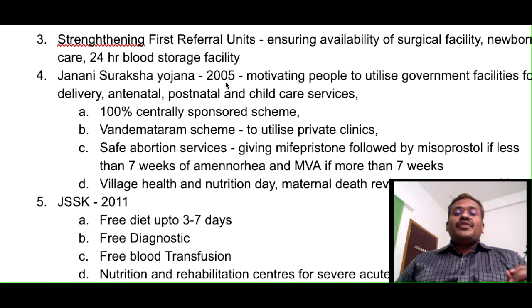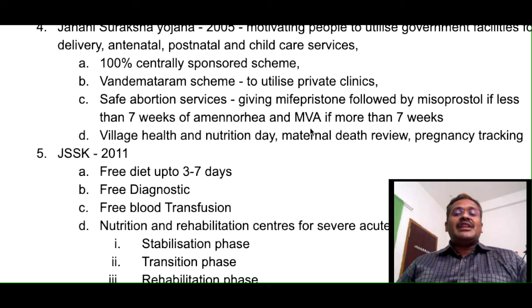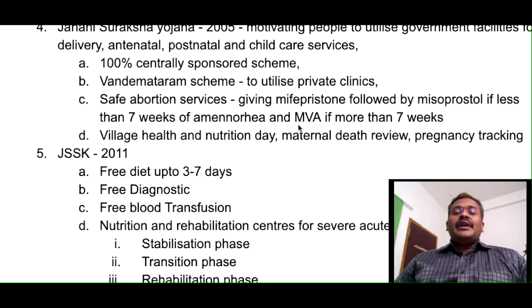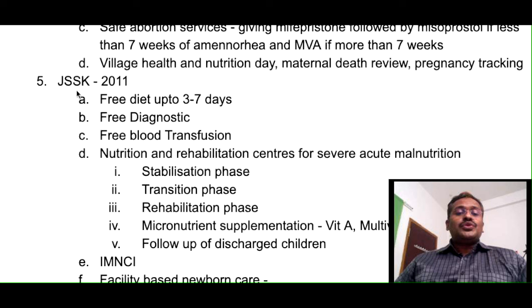Janani Suraksha Yojana was implemented in 2005 under RCH phase 2. The main goal is motivating people to utilize government facilities for delivery, antenatal, postnatal, and child care services. It is a 100% centrally sponsored scheme. A scheme was also introduced to utilize private clinics for delivery of MCH services. Safe abortion services were standardized: mifepristone followed by misoprostol if pregnancy is less than 7 weeks of amenorrhea, and manual vacuum aspiration if more than 7 weeks. Village health and nutrition day, maternal death review, and pregnancy tracking were also introduced.